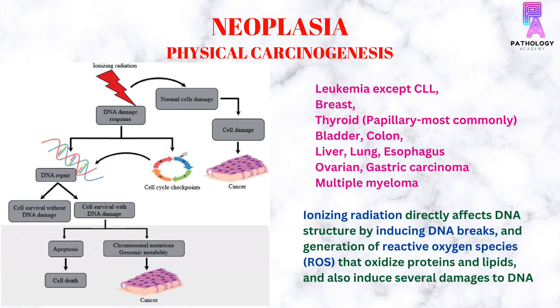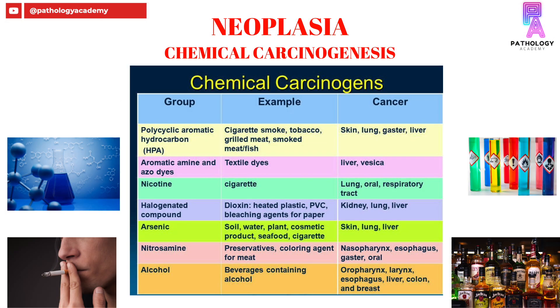Few examples of cancers caused by ionizing radiation are leukemias (except CLL), breast, thyroid, bladder, colon, liver, lung, esophageal cancers, ovarian and gastric cancers, and multiple myeloma.